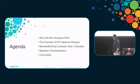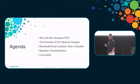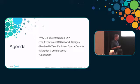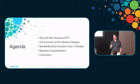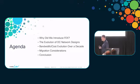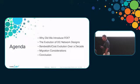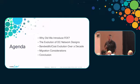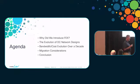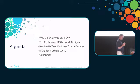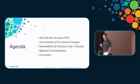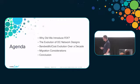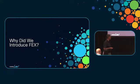Today we'll cover why we introduced FEX and the rationale for doing that. Then we'll get into the evolution of data center network design — how we evolved from FEX into spine-leaf architecture and what the most modern spine-leaf fabric-based designs look like. We'll discuss costs to clarify myths, discuss portfolio alignment to leaf-spine design, and spend the final 10-15 minutes on a migration discussion covering how to migrate from conventional architecture to leaf-spine in a non-disruptive fashion.